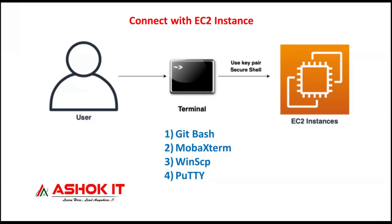Hello everyone. In this video we will discuss how to create an EC2 instance in the AWS cloud and how to connect with that EC2 instance using SSH client software. I'm going to show you how to connect with the machine using four different software: Git Bash, MobaXterm, WinSCP, and PuTTY. Let's get started.